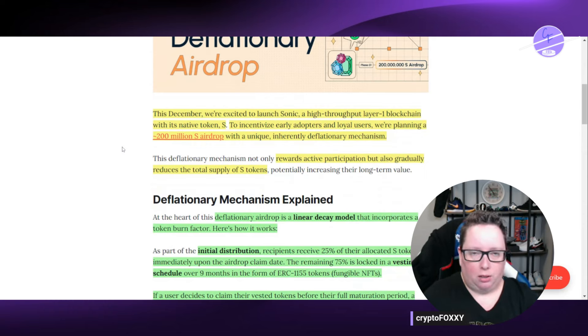But this December, this is why it has been gaining attention from market participants, because this December they are going to launch Sonic, a high throughput layer one blockchain with the native token S. So to incentivize early adopters and loyal users, they're planning a 200 million token airdrop with unique, inherently different deflationary mechanism.